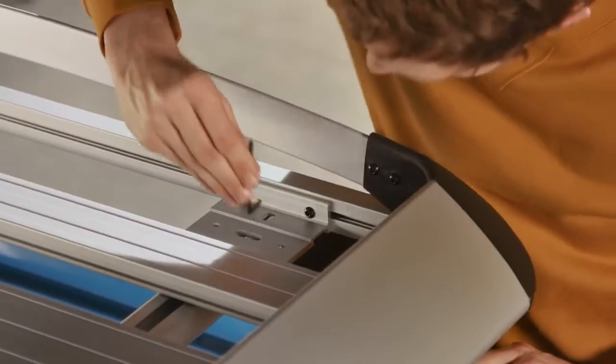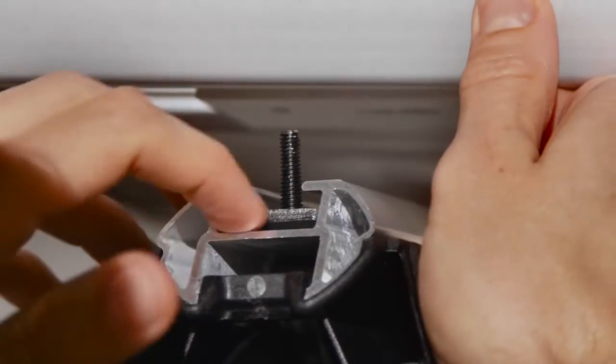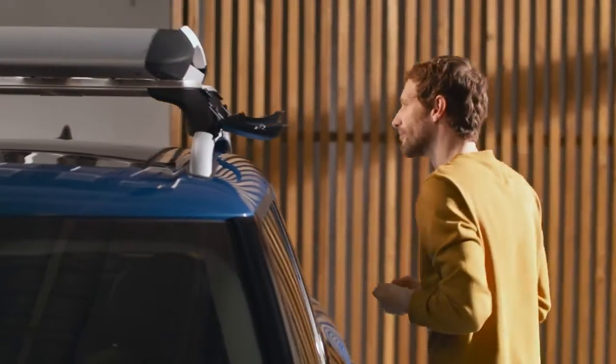Use the torque wrench to tighten all eight screws again. First thread in the sliding block screws, then lift the luggage basket over it. Repeat this for all sliding blocks.